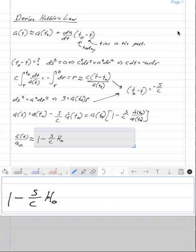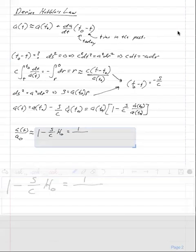Last time we derived that this a over a naught is equal to one over one plus z, the redshift.